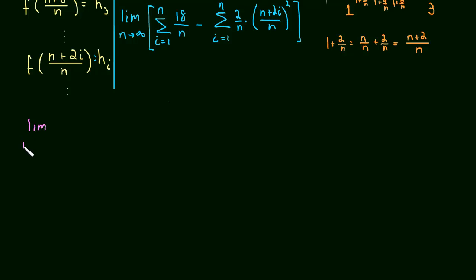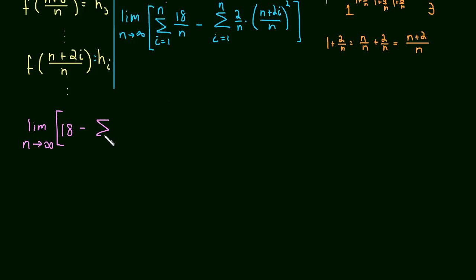The limit as n approaches infinity: the first sum — the sum of a constant 18 over n, taken n times — evaluates to just 18. So this is 18 minus the limit of the second sum. For that second sum we expand: 2 over n times n squared plus 4ni plus 4i squared, all over n squared.